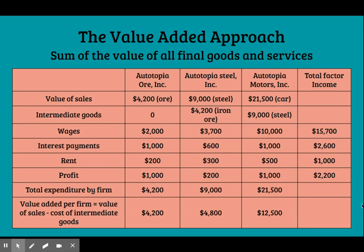If we add up the total value of all sales — intermediate and final — we get $34,700: that's $21,500 for the sale of the new car, $9,000 from the sale of the steel, and $4,200 from the sale of the iron ore. But this is double counting, and the value of GDP becomes artificially inflated.